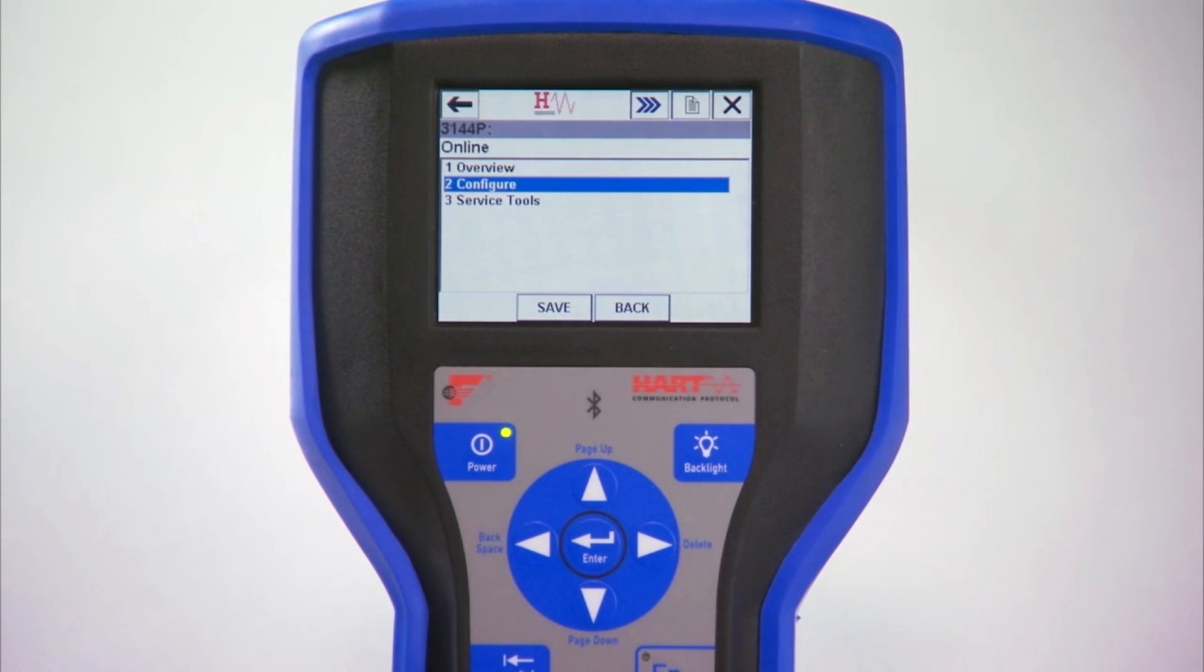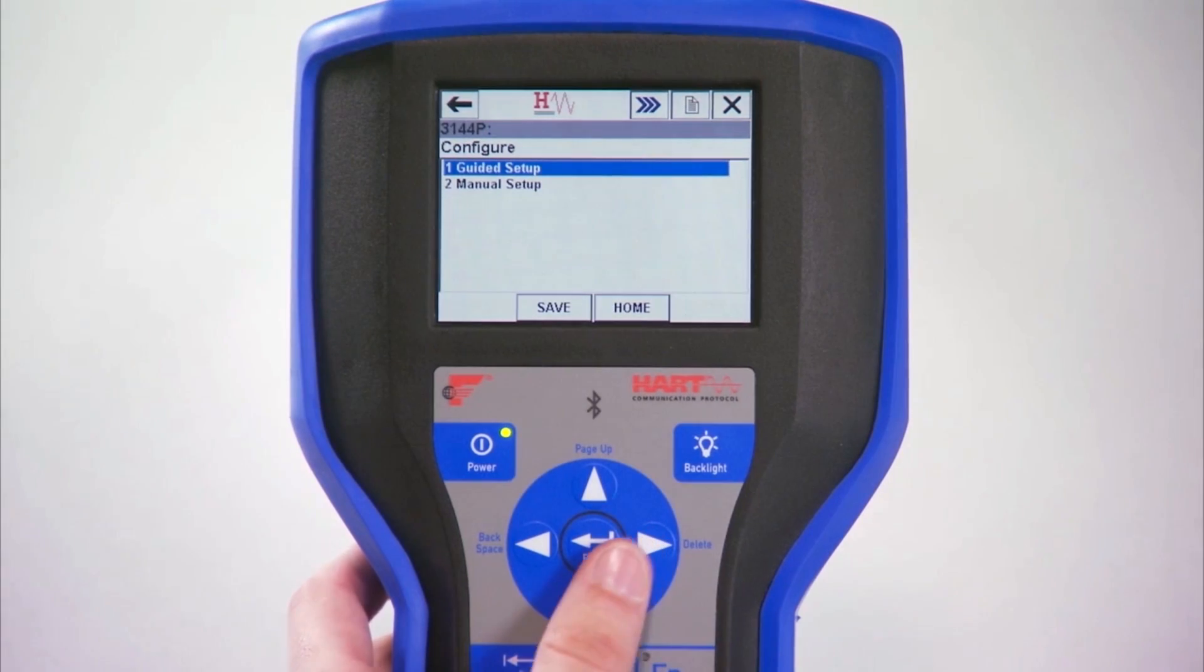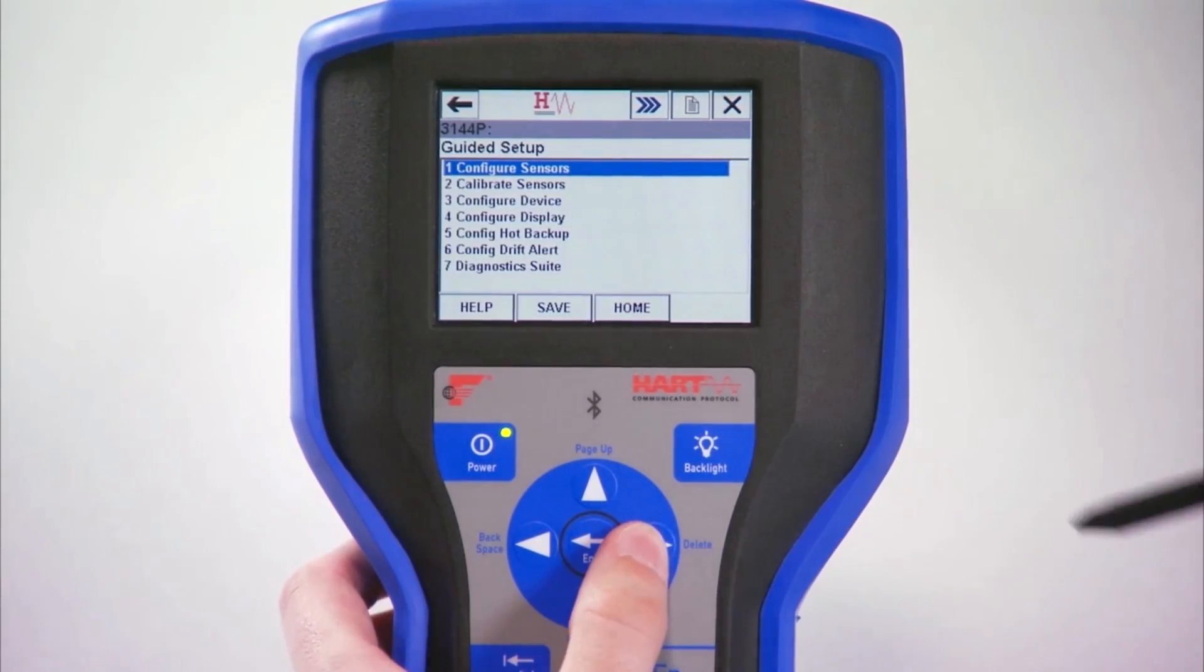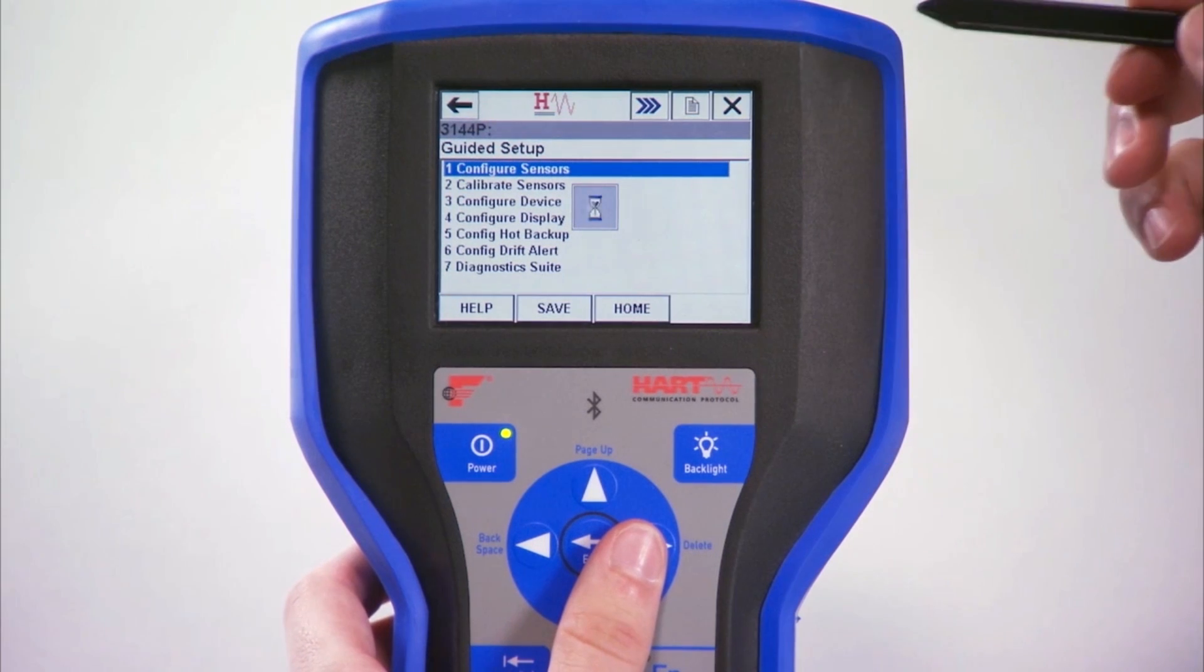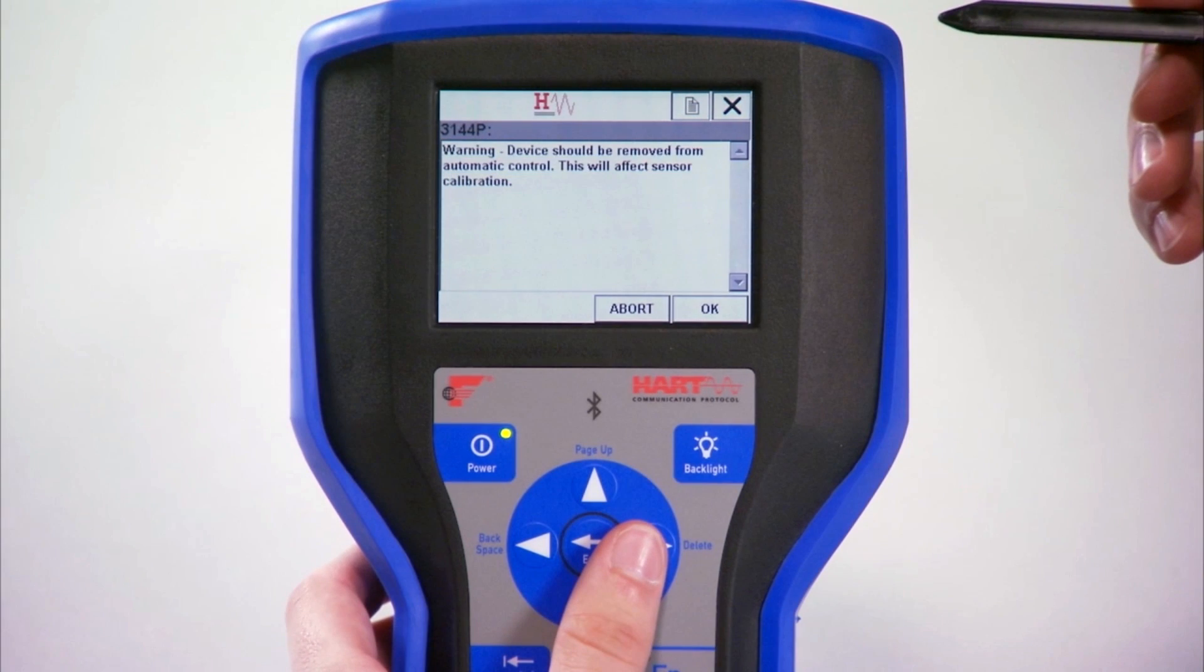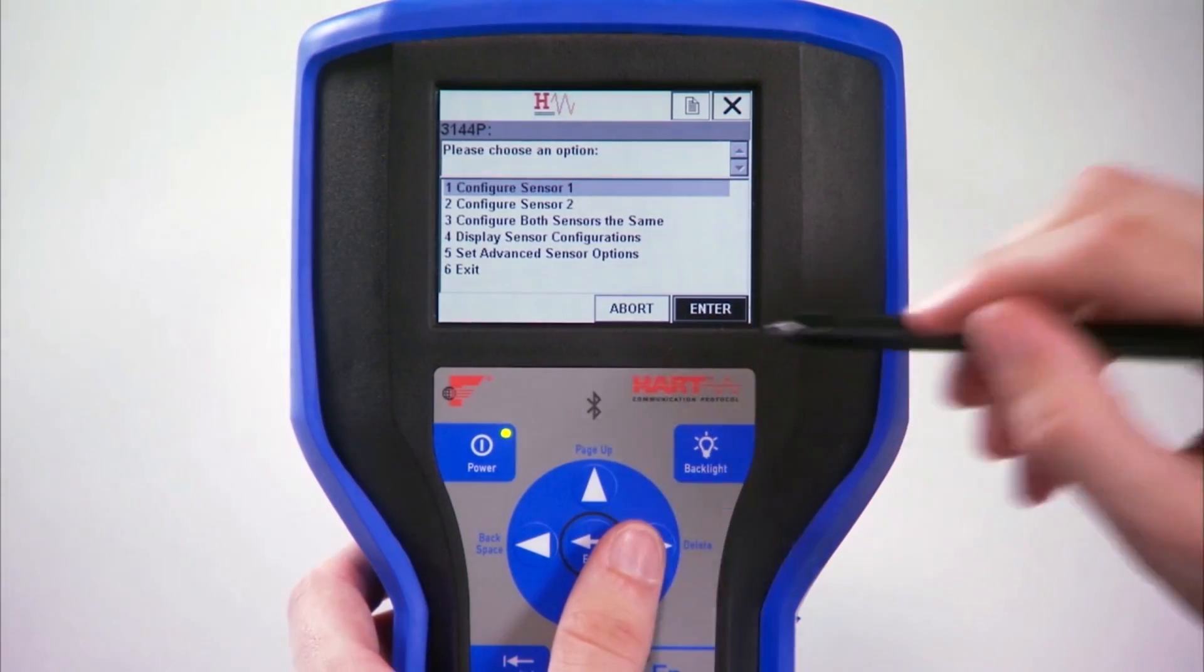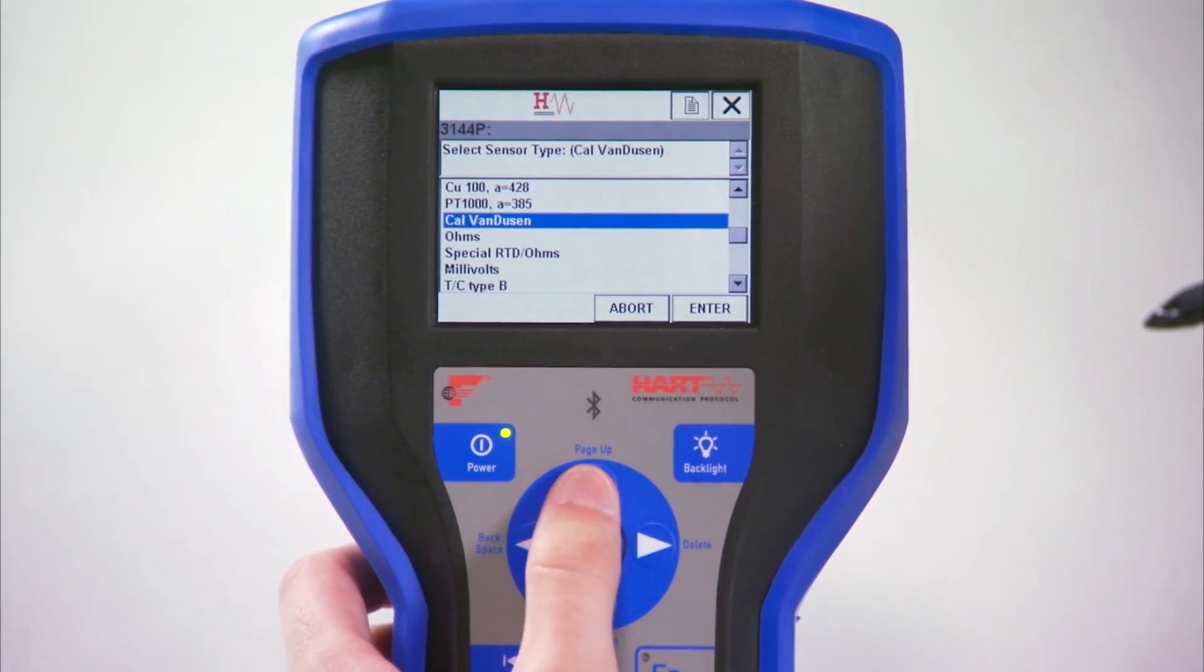From the home screen on a 475, click Configure, Guided Setup, and then Configure Sensor. A warning screen appears, explaining that the device must be removed from automatic control. Press OK. Then choose Configure Sensor 1 and press Enter.